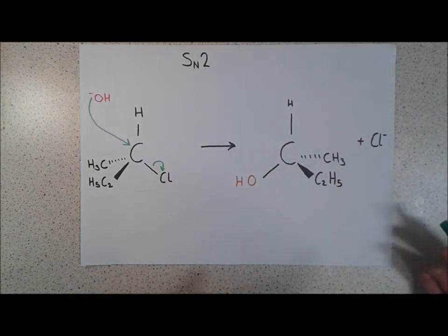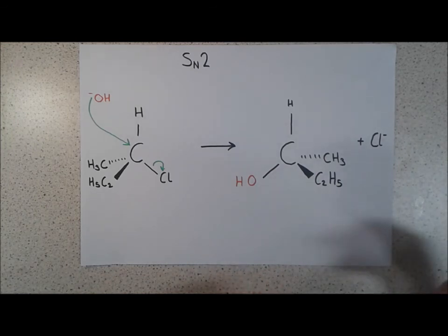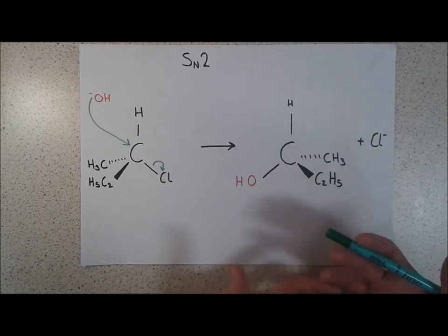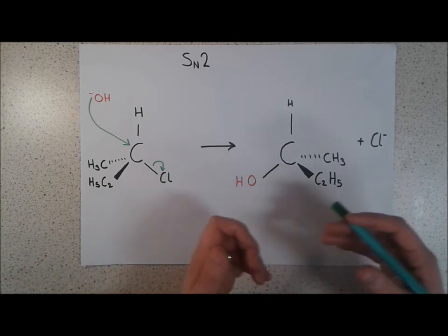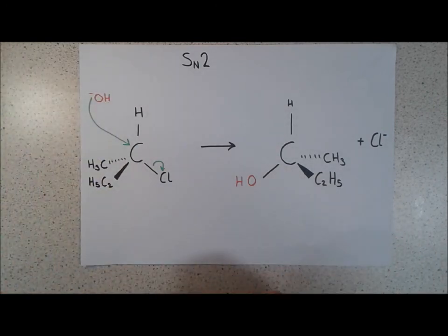So as a quick summary, your SN1 mechanism, no evidence of optical isomerism, or if you start with a pure enantiomer, you end up with a racemic mixture. With SN2 though, you can convert one into another, due to the way that the OH- attacks.